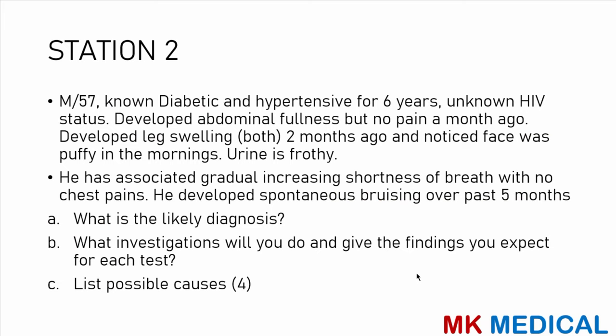Station 2: a male, 57, non-diabetic and hypertensive for 6 years, unknown HIV status, developed abdominal fullness but no pain a month ago, developed leg swelling two months ago, and noticed his face was puffy in the mornings. Urine is frothy. He has associated gradually increasing shortness of breath with no chest pains, and developed spontaneous bruising over the past 5 months. What is the most likely diagnosis? What investigations would you do and what findings would you expect? List four possible causes.